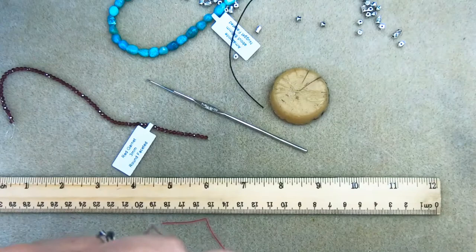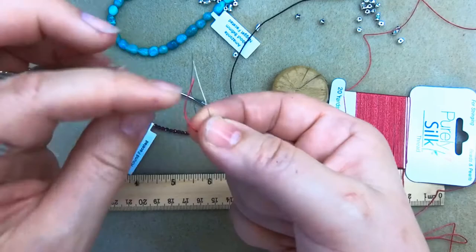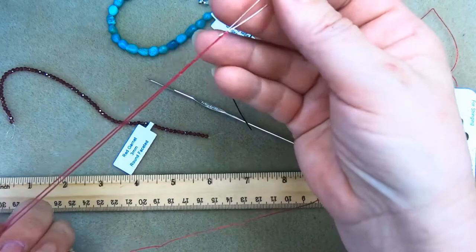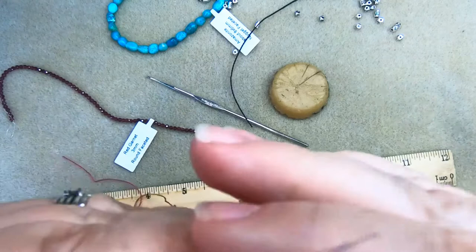I pull the length off, take either a collapsible eye wire needle, which is really the best because they're thinner, or a big eye needle. I center my silk, my six yards if I'm doing it doubled, on my needle, so I've got six yards split in the center with three yards on each half.